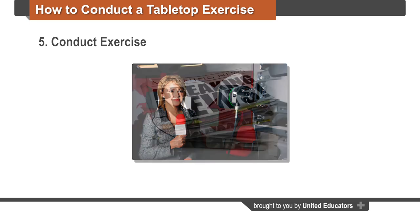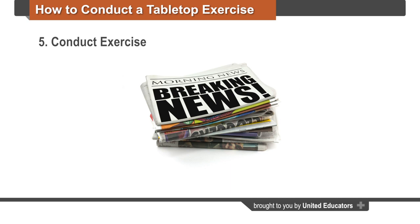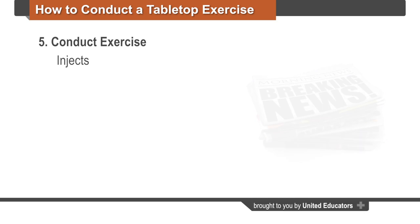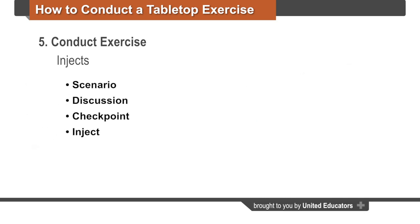In an actual crisis, new information surfaces. In a tabletop exercise, this new information is presented to participants in the form of injects. Injects are new information that expand the scenario and are strategically placed throughout the exercise to test participants' ability to adapt their response. A typical sequence of a tabletop exercise is: scenario, discussion, checkpoint, inject, discussion, checkpoint. The exercise continues in this way until all injects have been revealed. There are generally four to five injects for each scenario. Let's check back in with our exercise participants to see an example of an inject.